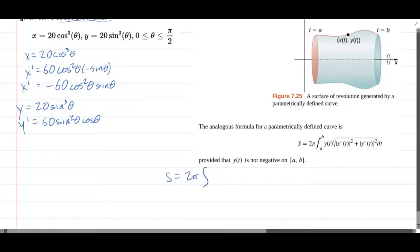So we're going 0 to π/2. Regular y, that's up first: 20 sin³θ. And then inside the square root, x' is squared. So it's 60 cos²θ sin θ squared.